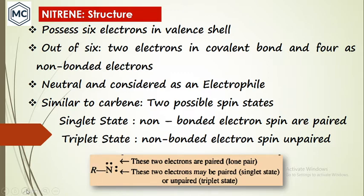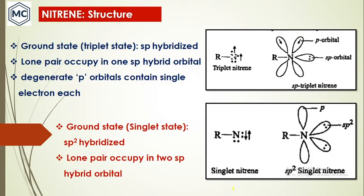In triplet nitrene the spins are parallel, and in singlet they are antiparallel. In nitrene, one electron pair is always paired; the other two electrons may be paired in the case of singlet and unpaired in the case of triplet. There are two types: triplet has parallel spin and singlet has antiparallel spin.